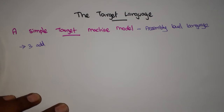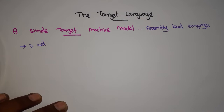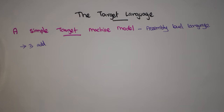In this video we are going to discuss about target language. Target language is the last output of your compiler. The compiler takes source code as input and generates machine-level code or assembly-level code, called the target code. Only when the programmer designing the compiler knows about this target language can they design and generate this code efficiently.